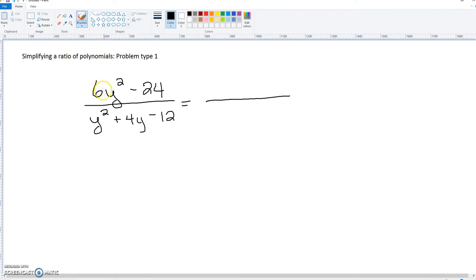Looking at the 6y squared minus 24, what we can factor or divide out is a 6. So we're going to put the 6 here and now we've got y squared minus 4. We can still break this down even further.